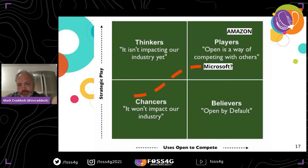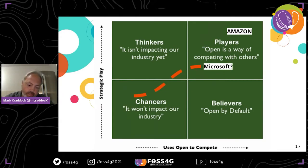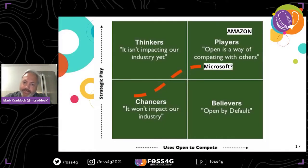If we think about Amazon, they're a player — top right corner. They use open source as a weapon against competitors. They use Wardley Mapping; they're very strategic. If we look at Microsoft, maybe they were chances, maybe thinkers, and maybe they're starting to use it in more of a strategic way. If you look on Twitter, you can see Simon Wardley sat with the CEO of Microsoft. So — do Microsoft understand yet why they're using open source? Are they chances, thinkers, or players?